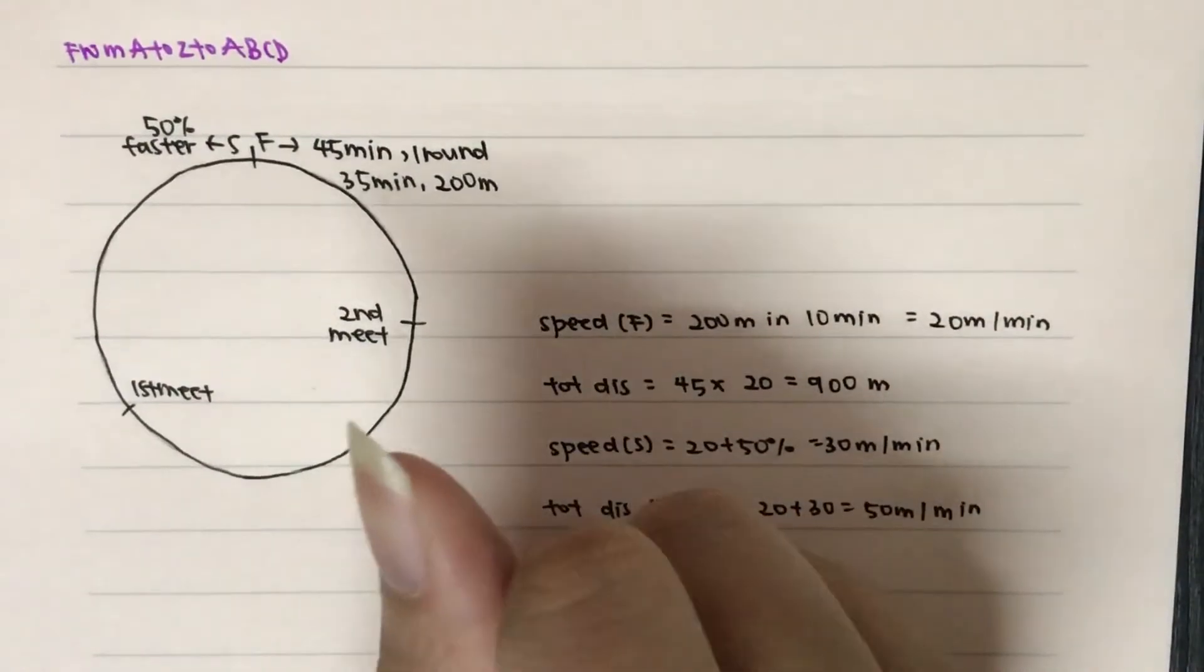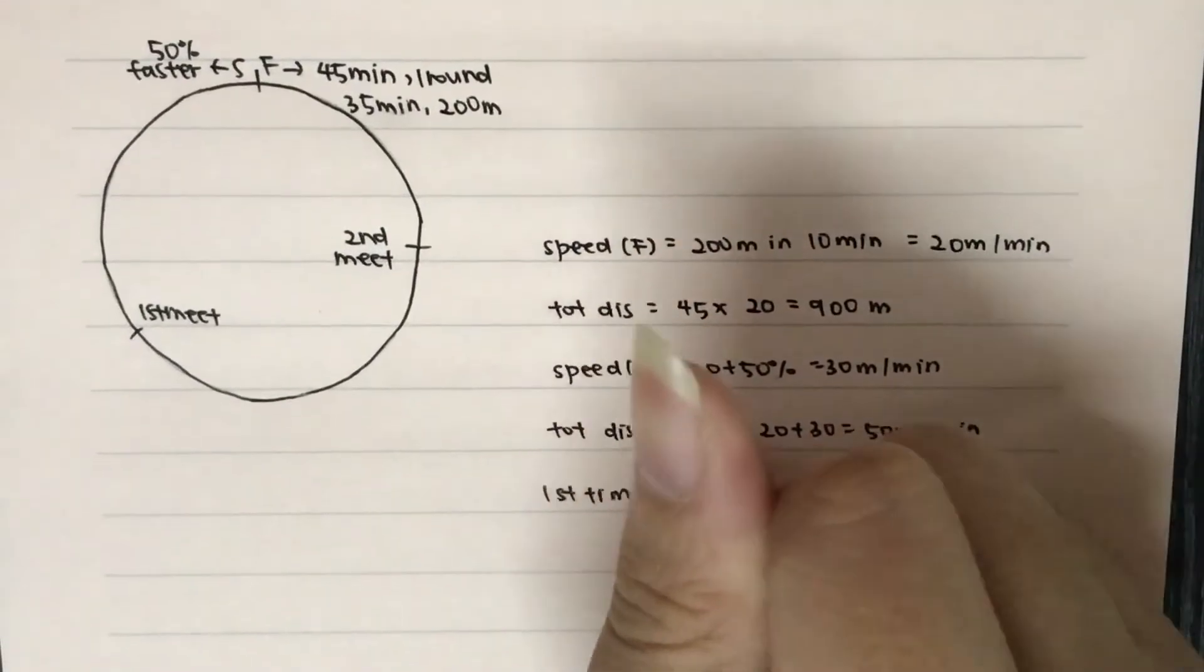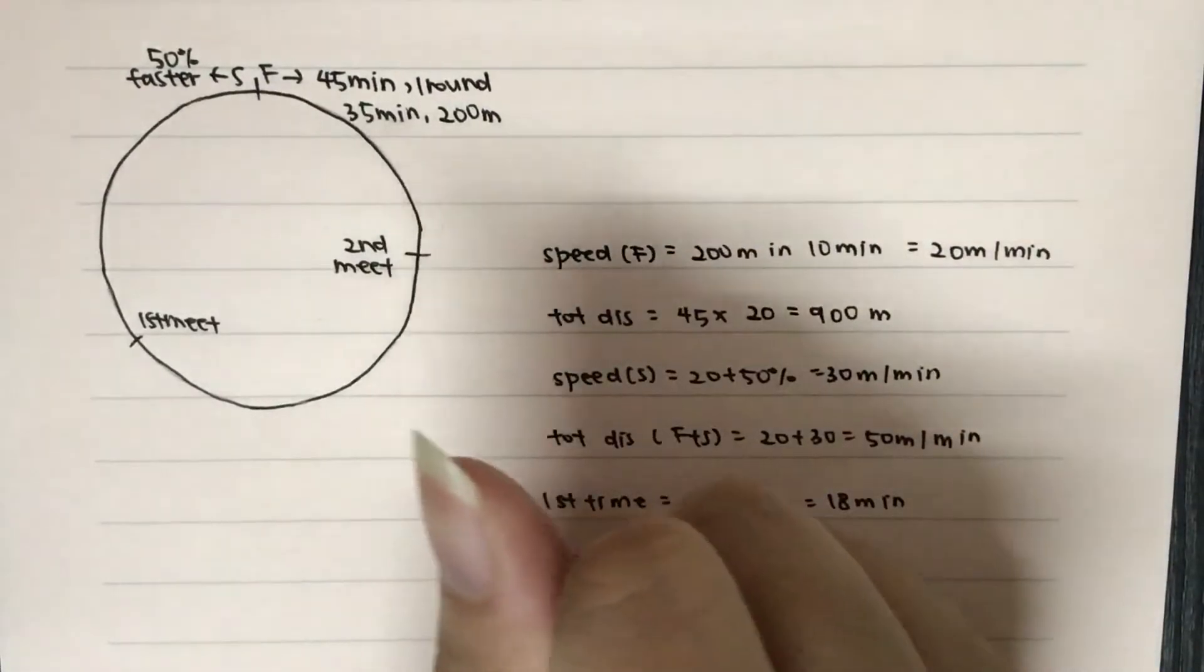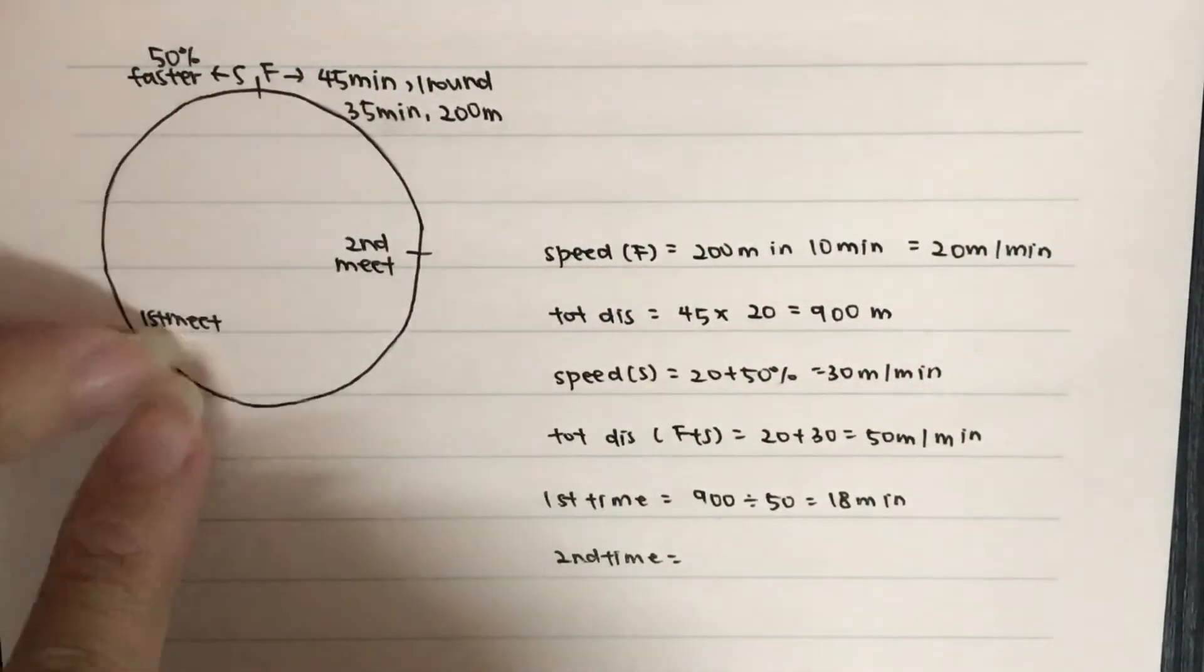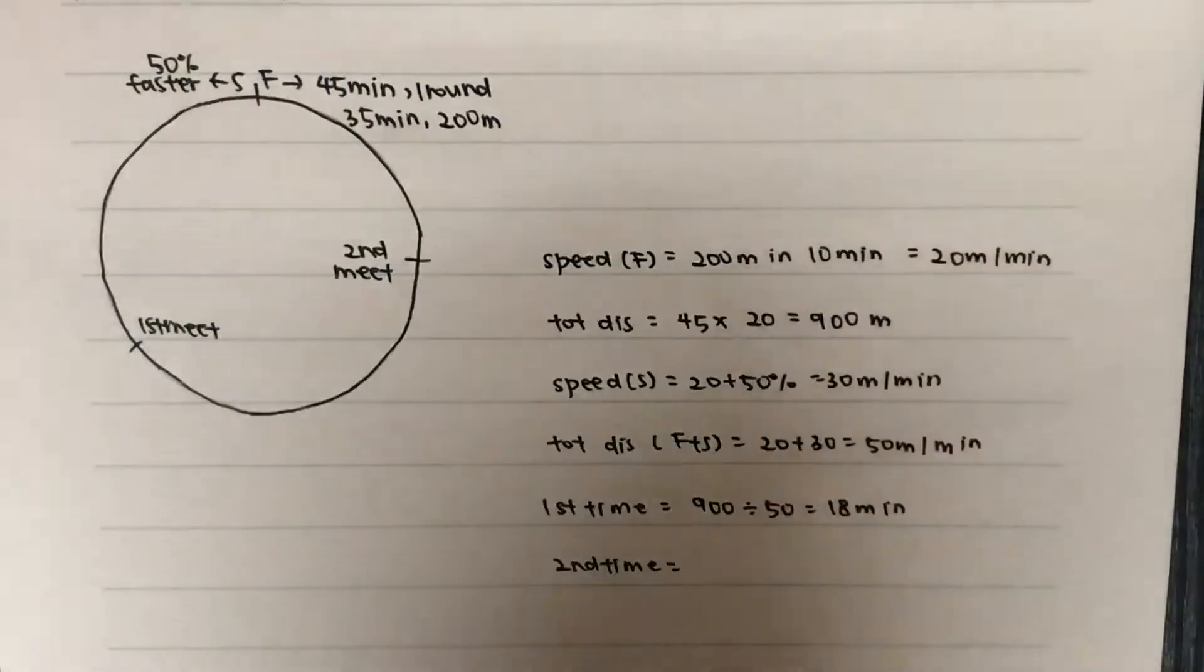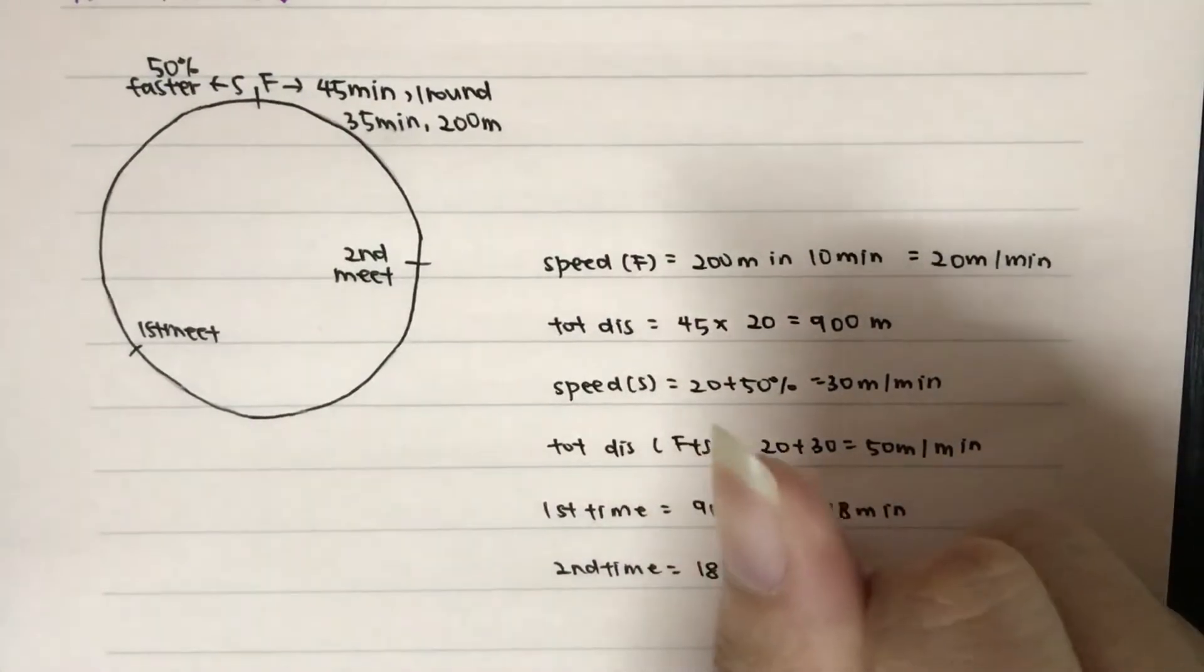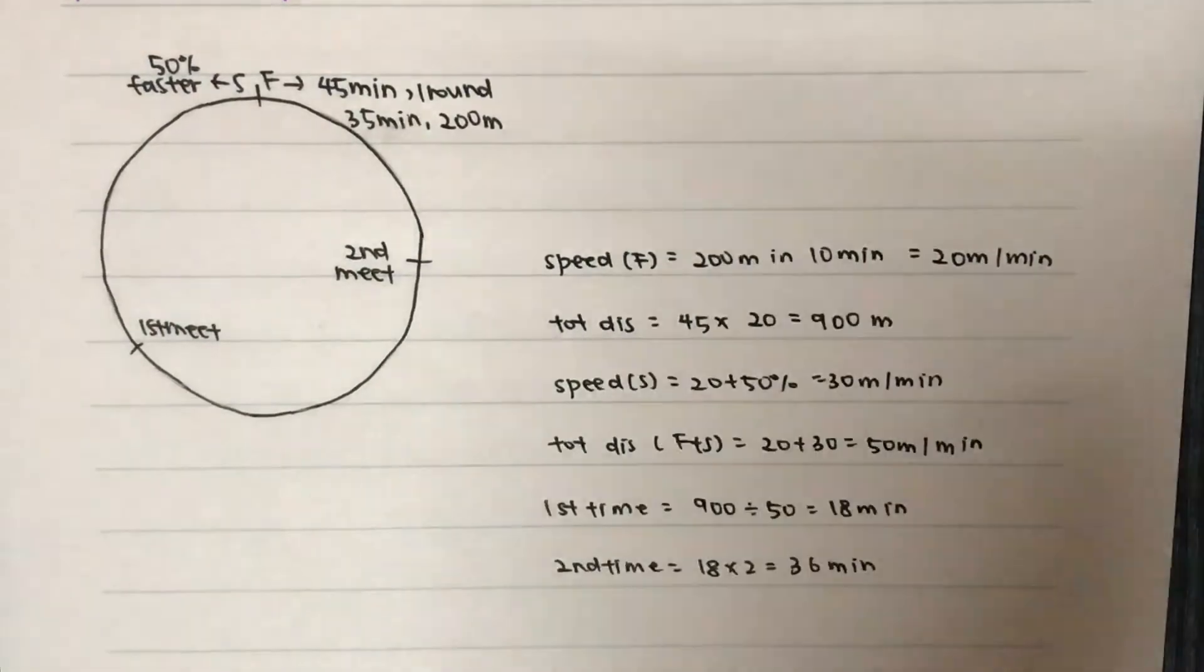So the first time they meet will be equal to after they complete 900 meters, and this will take place in 18 minutes time. The second time means that they must have traveled 900, meet at a new starting point, go another 900, so meet at the second meeting point. Therefore, we will be able to use this to analyze that the time taken will be the same, thus it will take 36 minutes to meet for the second time.